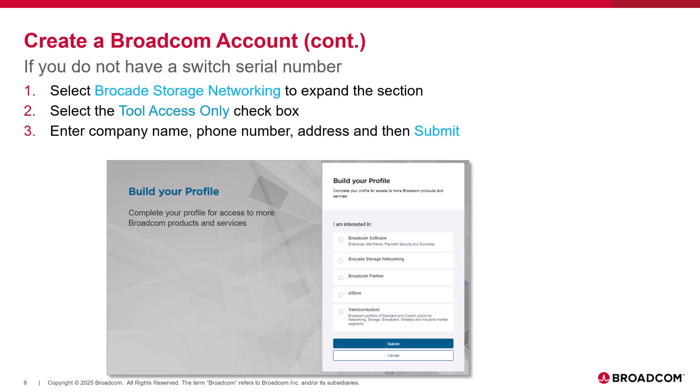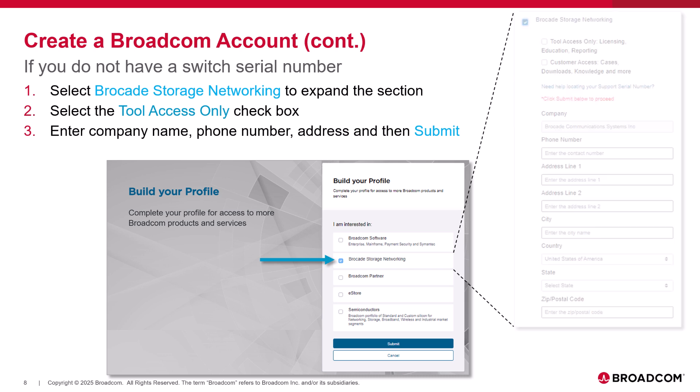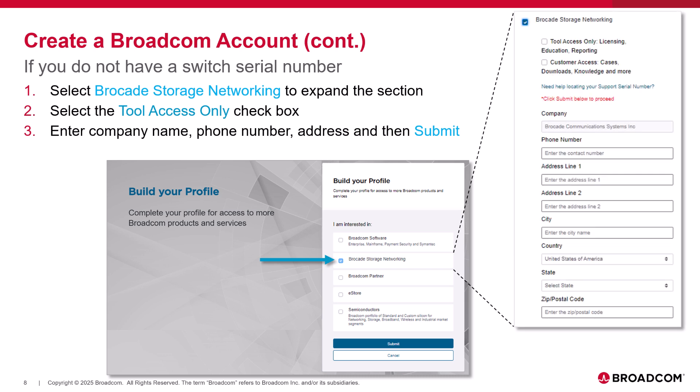Depending on whether you have a switched serial number or not will determine what you have access to. Whether you have a serial number or not, the first thing you do is select the Brocade Storage Networking checkbox. If you don't have a switched serial number, you want to select Tools Access Only. This provides access to licensing, education content, and reporting. Enter your phone number, address, your company name, and then Submit.